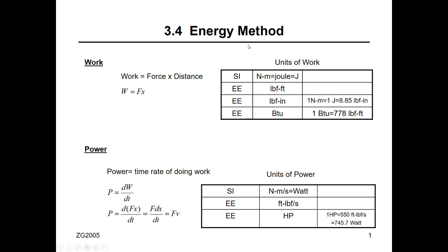A conservative mechanical system is a system that has no energy loss at any time. I will show you in a minute what that means. Before we go to the method, let's briefly review what we know about energy. What do we know about work, for example? Work — what is work?